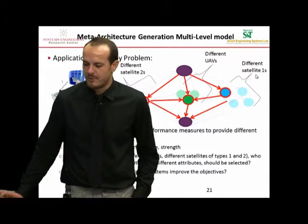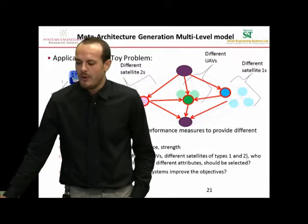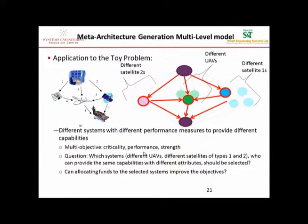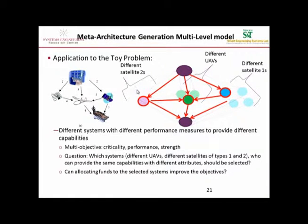Our meta-architecture generation model captures the multi-objective nature of this problem — minimizing criticality, maximizing performance, and maximizing strength — and determines which satellite options and UAV options should be included. Furthermore, our model can capture the case where it is possible to invest in these alternatives for better performance, criticality, or strength. For example, funds can be allocated to satellites of type 1 to improve criticality, performance, and strength. Our model will determine how much funds should be allocated to which satellites and UAVs to achieve improvements across these attributes.